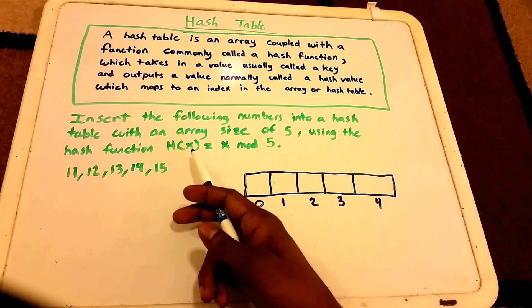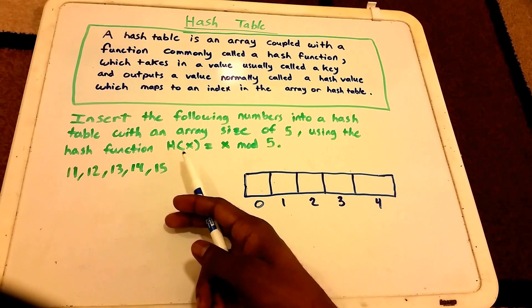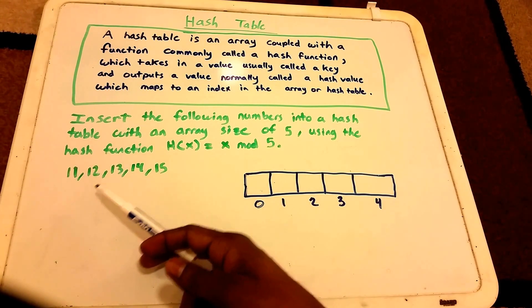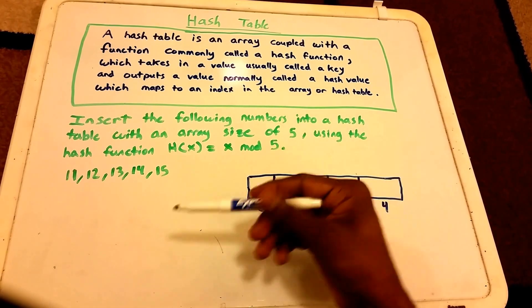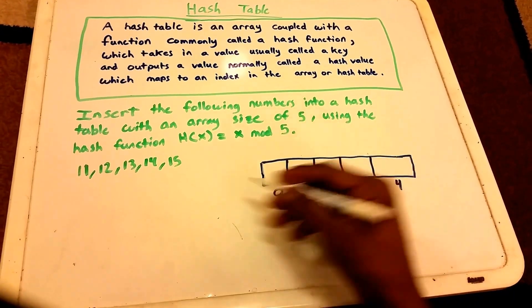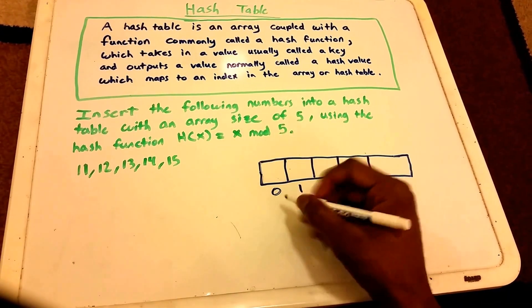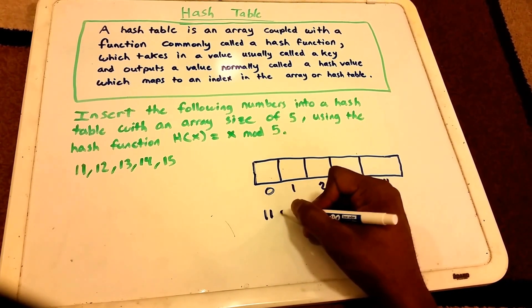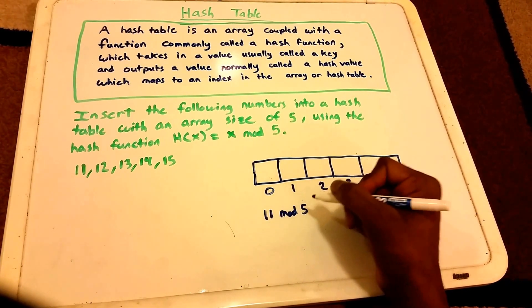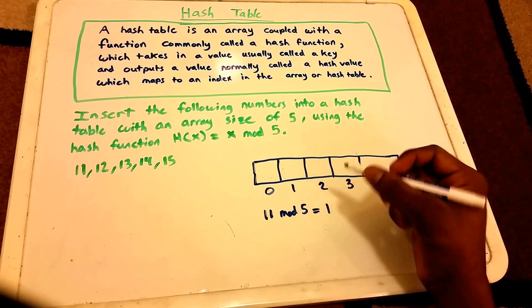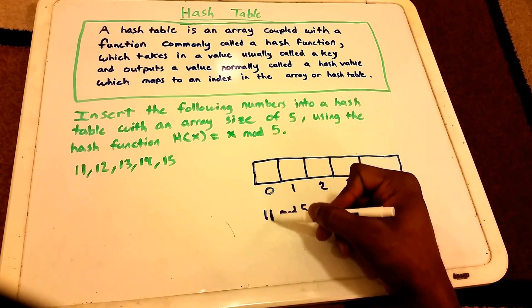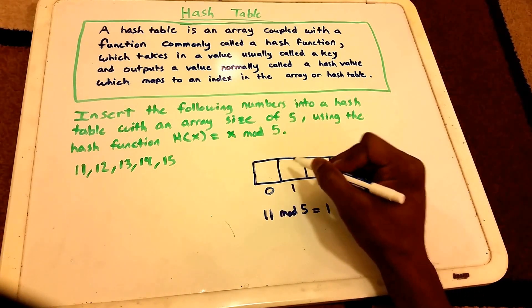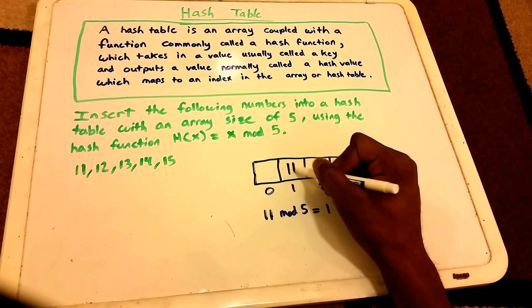Now we want to use this hash function to determine where these numbers need to go inside this array. First up we have the number 11. Using the hash function, we get 11 mod 5, which equals 1. So the hash value is 1 and we put the number 11 at index 1.